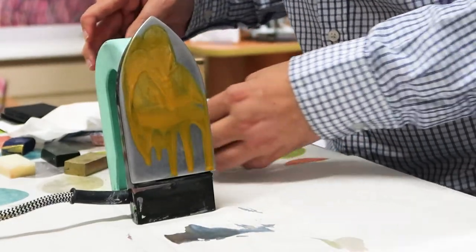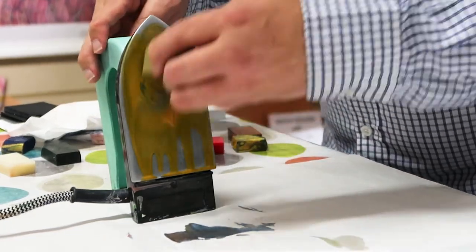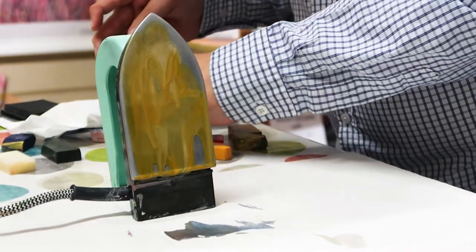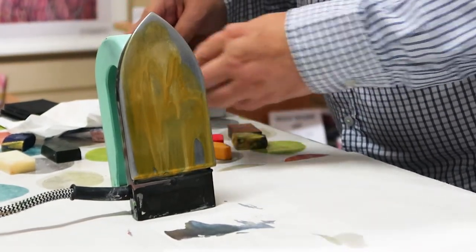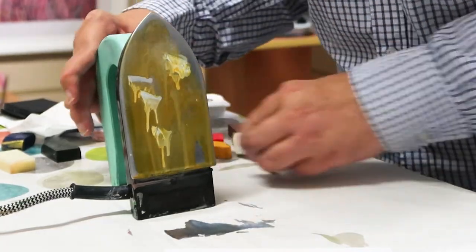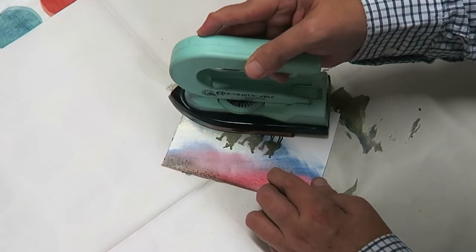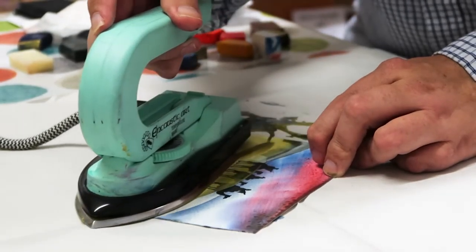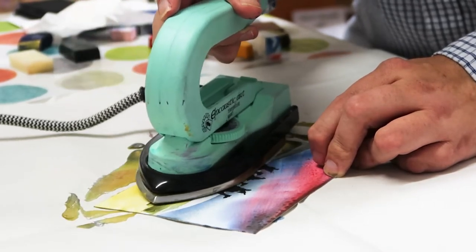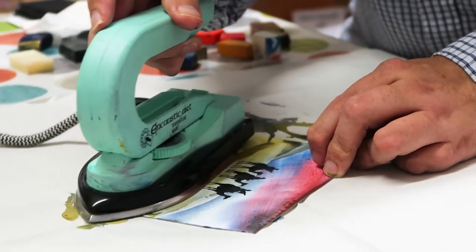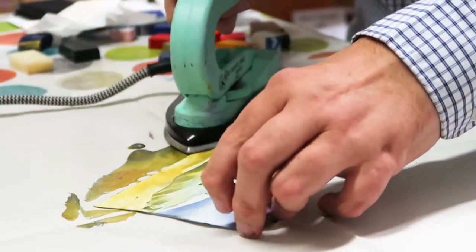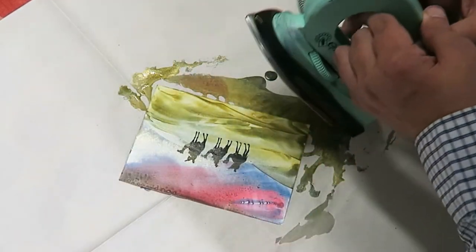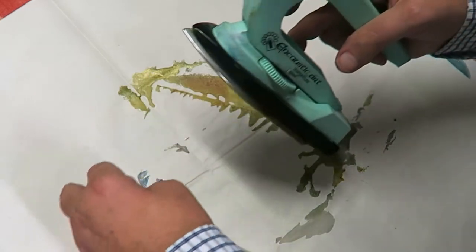I'm going to sit these in a desert type environment. I've got gold and yellow, just a tiny bit of white. Just move the iron around, spread the color, and take my iron and lift and dab together.